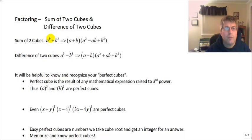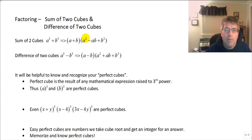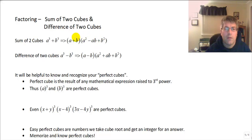The sum of two cubes follows the pattern a cubed plus b cubed, and can be factored into the quantity a plus b times a squared minus ab plus b squared. So this is the binomial a plus b multiplied by the trinomial a squared minus a times b plus b squared.